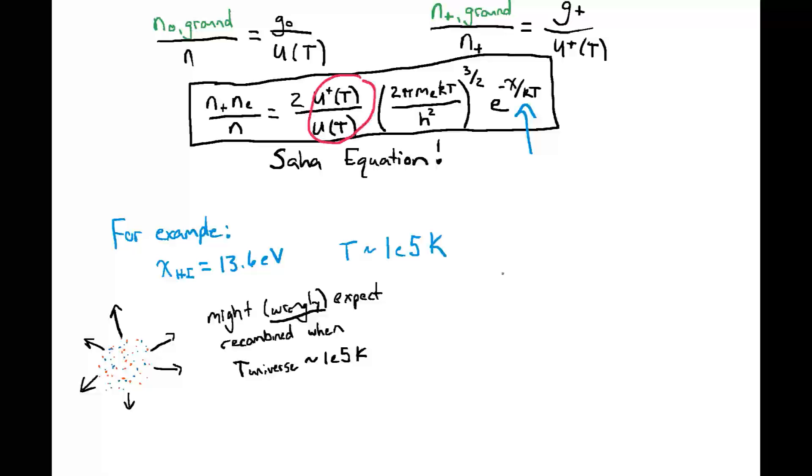But this is incorrect, because what you didn't pay attention to were these degeneracy factors. Because ionized hydrogen is just a single proton, and a proton just has two spin states associated with it. So its degeneracy factor is of order 2. Whereas for neutral hydrogen, we get a partition function that is the sum of all the different energy states of hydrogen times the degeneracy of that state times the probability of its occupation, e to the minus E_i over kT.